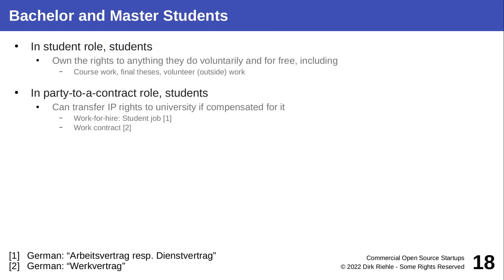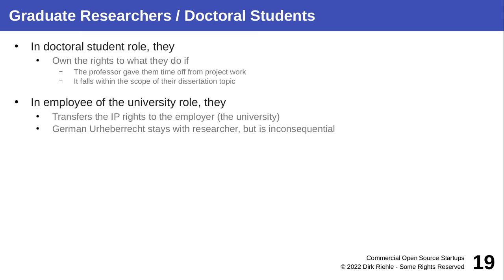If you want to do a startup, watch out how and when you're writing code. Only if you do it in a private capacity — like a student in a degree program — is it not paid work and not done on behalf of the university. As soon as it's paid work, you're doing it on behalf of the university, which will automatically acquire the intellectual property rights by way of the work contract. In the student role, students own the rights to anything they do voluntarily — all coursework is yours. But if they take a job with the university as a student helper, by way of the contract they sign, they transfer the IP rights to the university.